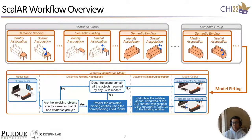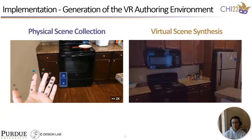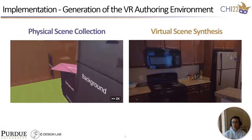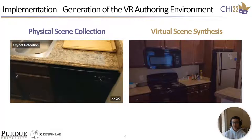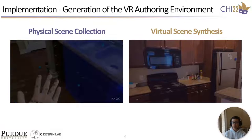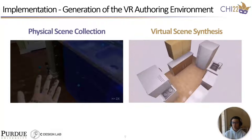Next, I will explain some key implementations of SCALAR. First, how does SCALAR generate those virtual scenes with spatial and quantity variations? After raising a basic idea of the target deploying environment, the designer invites potential AR consumers to collect their local environments as samples using the scene collection modules of SCALAR. We adopt the combination of 2D object tracking and 3D scene understanding to get both the identity and spatial properties of the physical objects. AR consumers just follow the guidance to scan the environments, and the final outcome will be displayed as 3D-labeled bounding boxes. Then, for each collected scene, we apply a genetic algorithm to synthesize more virtual scenes with the scene variations mentioned before, and render them using pre-assigned CAD models to construct the VR authoring environment.